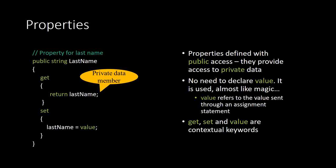lastName is considered a private data member. You could create a class — for example, last names of people in different departments — and copy it across departments since most of your private data member definitions will be the same. Properties are defined with public access so they provide access to private data. There's no need to declare the value separately; it's just used. The get, set, and value are contextual keywords.